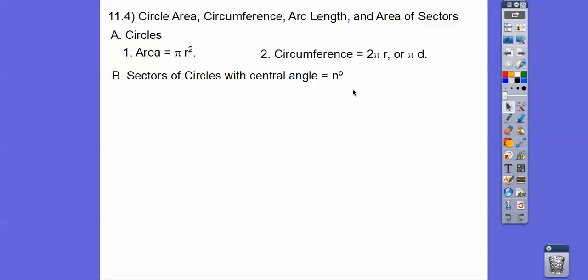So sectors of circles that have a central angle n degrees, central angle means it comes out from the center of the circle. So if it's n degrees, then the area of that little sector of a circle is like a piece of a pie, or a piece of a pizza, that little piece that comes out and it has that little wedge shape. So the area of that is, remember, the whole circle is 360, so the fraction of the circle is n/360th, and then we just use the area formula πr².